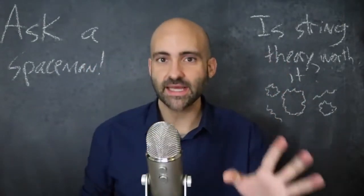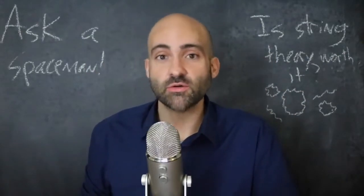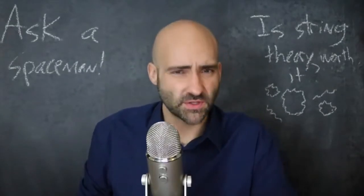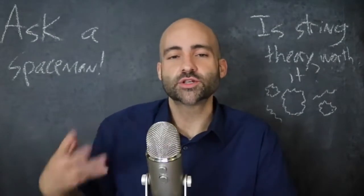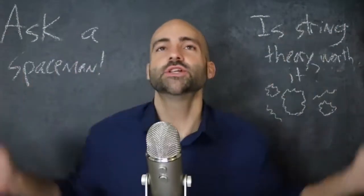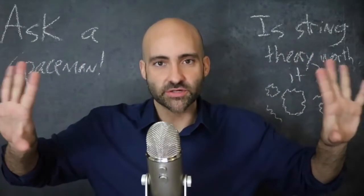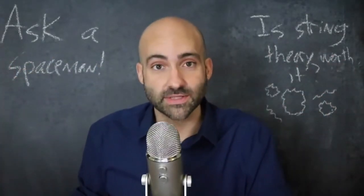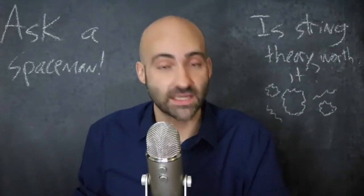ADS stands for anti-de Sitter. De Sitter was a person who worked a lot with general relativity and possible universes and what the universes might be made of. He constructed one kind of space-time that was completely empty — a universe that's totally empty but has a positive cosmological constant, so you get accelerated expansion. This kind of sort of looks like our universe, and our universe looks very closely to what's called a de Sitter universe.